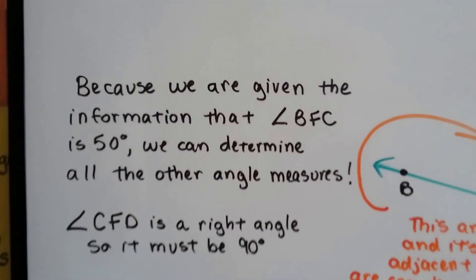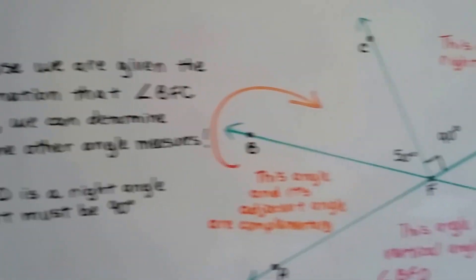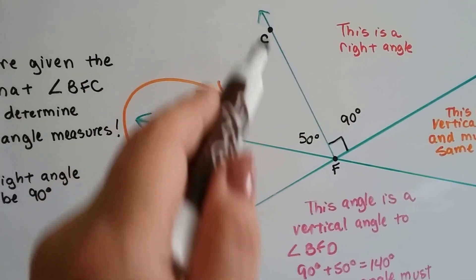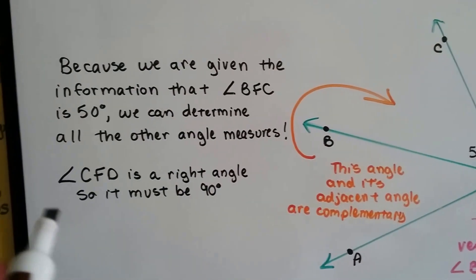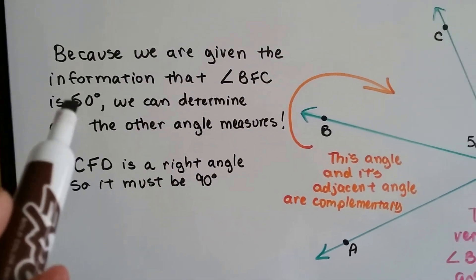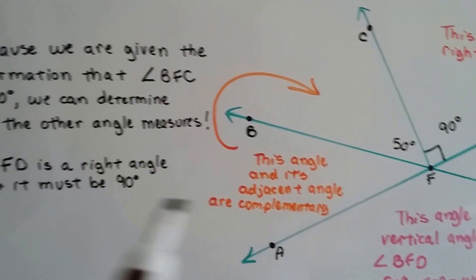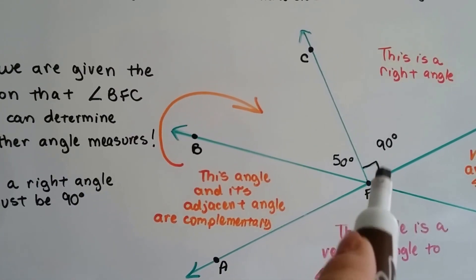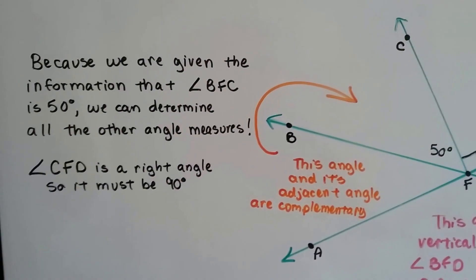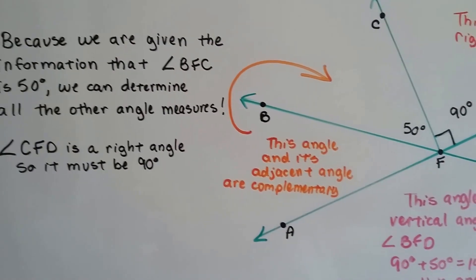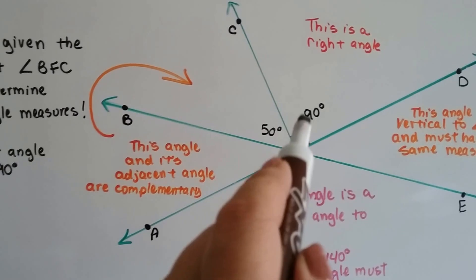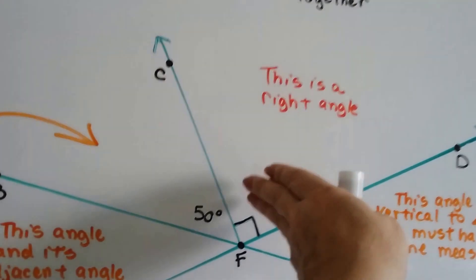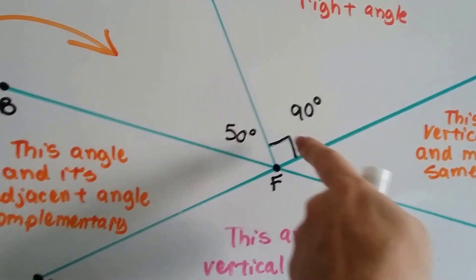So because we're given the information that angle BFC, where's BFC? B-F-C. Because we're given the information that angle BFC is 50 degrees, we can determine all the other angle measures, just from knowing this, and this being a right angle. Angle CFD is a right angle, so it must be 90 degrees. It's got the little box. It must be 90. So even if we didn't have that 90 there, we would know it's a 90 degree angle because of that box.